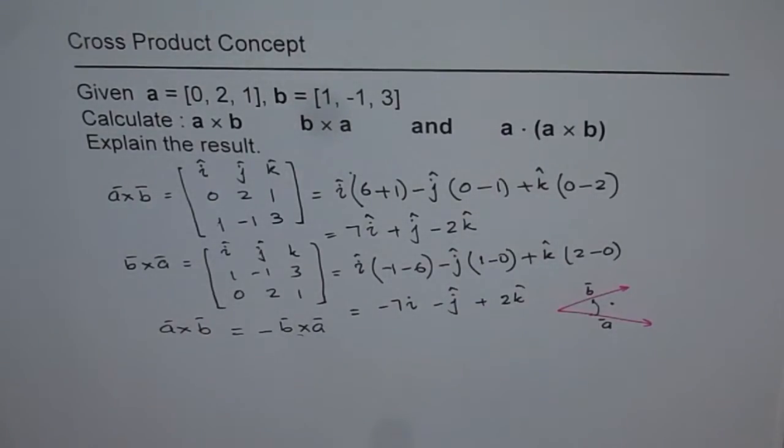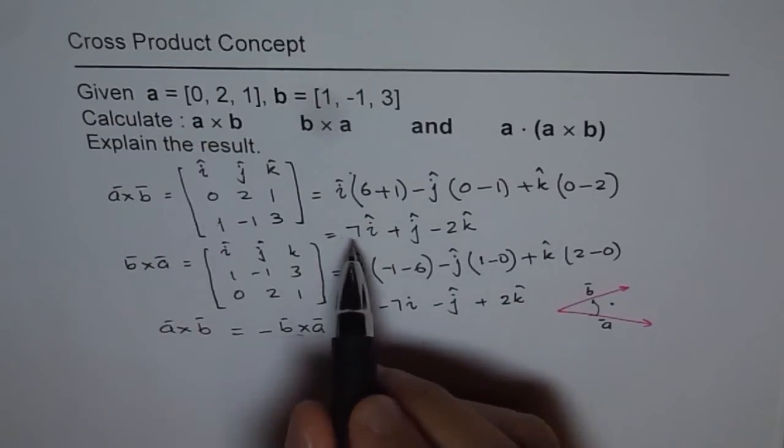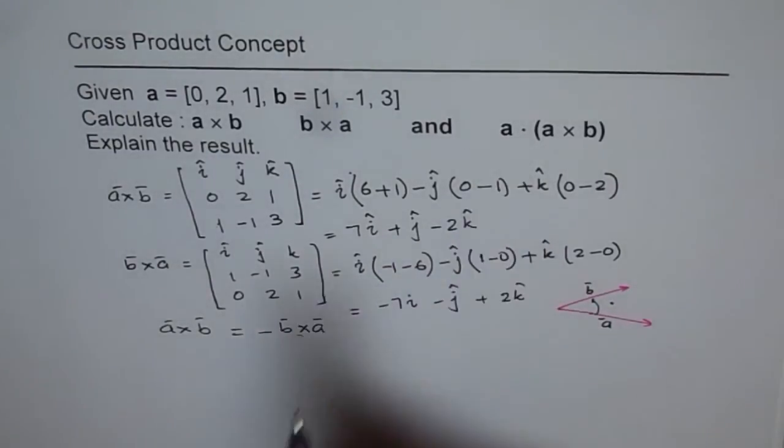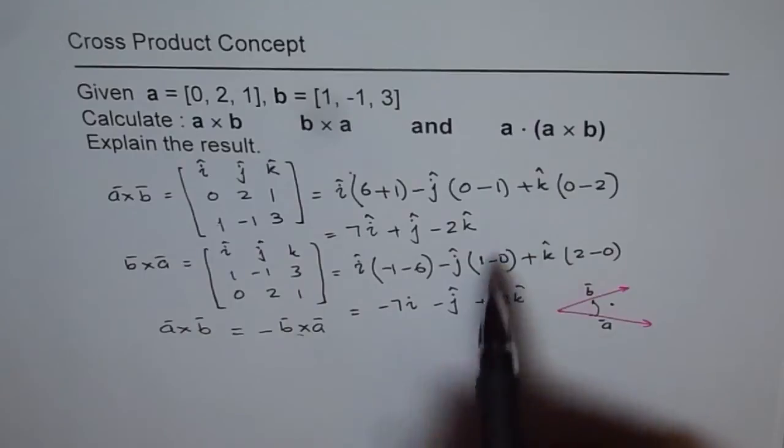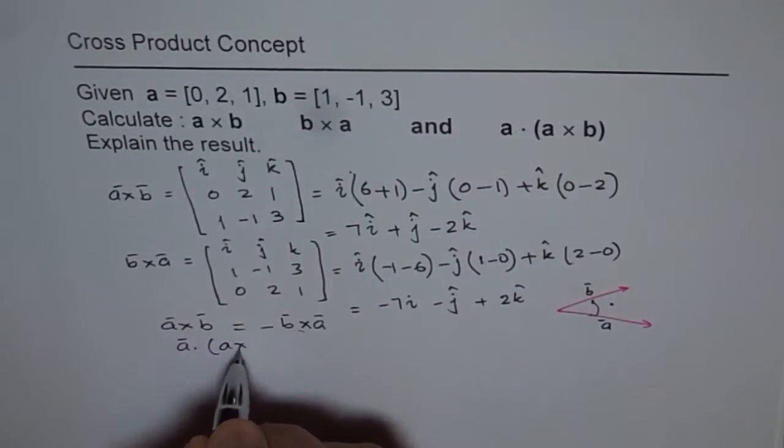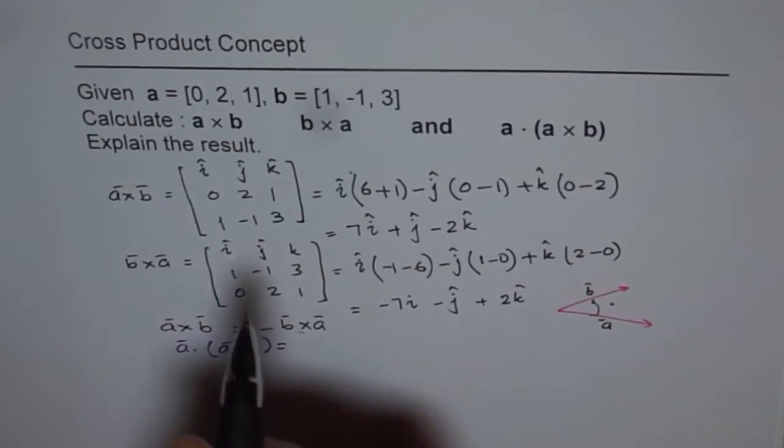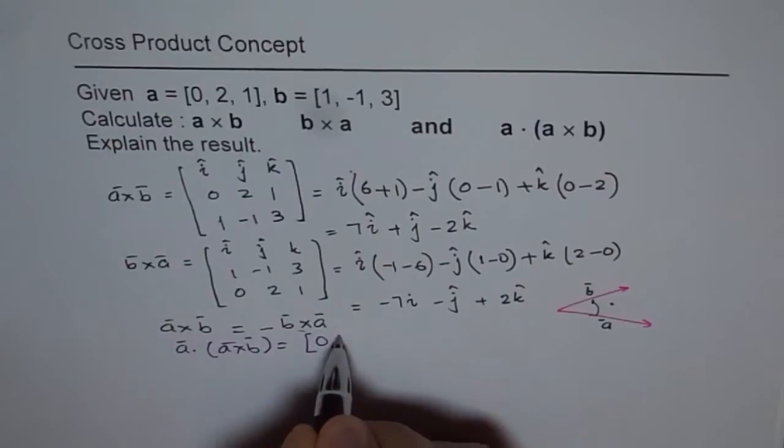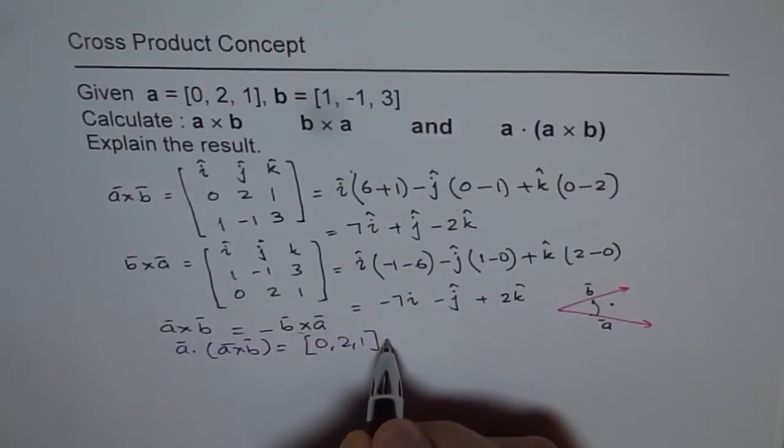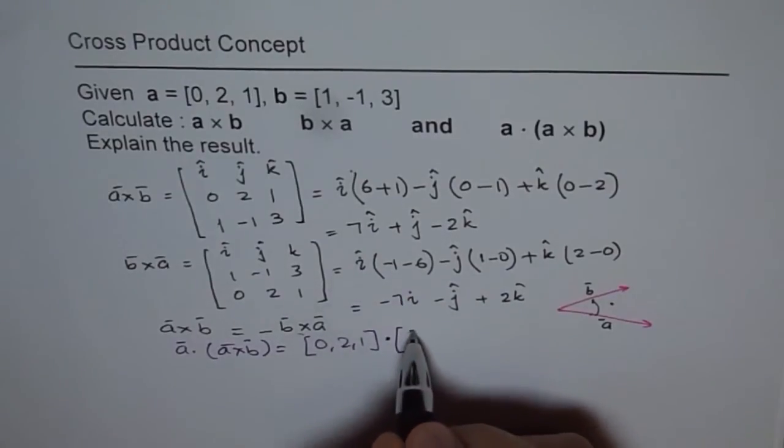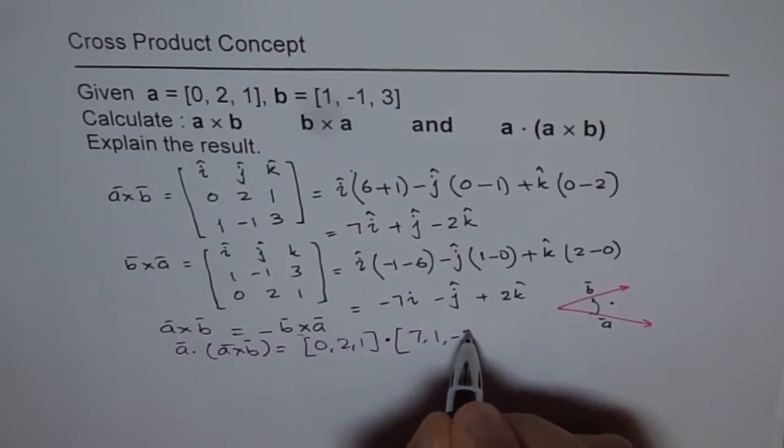We already have A cross B as 7i plus j minus 2k. Let us do A dot A cross B. So we have A dot A cross B equals to, vector A is 0, 2, 1. And dot A cross B is 7, 1, minus 2.